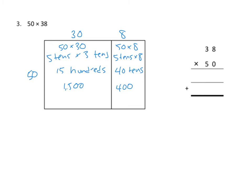If we look at that in our vertical method, we see a very similar thing. We see that we are multiplying 50 times 8, which is 400, and the other thing we're going to do is we're going to do 50 times 30, that's 50 times 3 tens, and that was going to be 1,500.